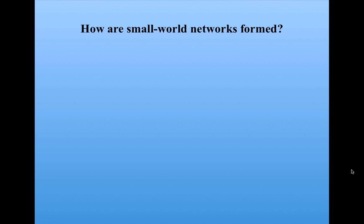One of the most important contributions of Watts-Strogatz's paper was presenting a simple model of how small world networks could be formed. That is, how a network could be formed that has low average path length, yet still has high clustering. Here's how the model worked.